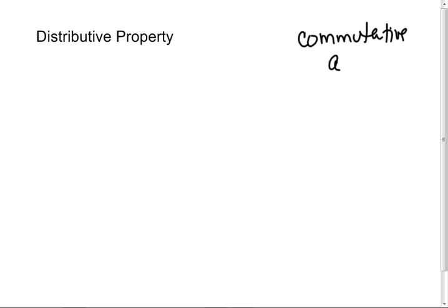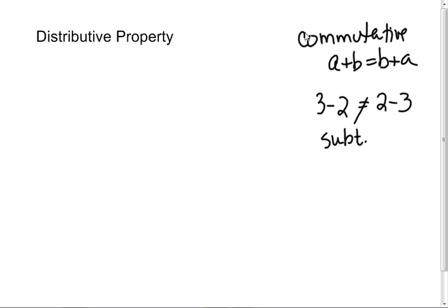Do you remember the commutative property? A plus B equals B plus A. What if I have 3 minus 2 and 2 minus 3? Are those the same things? No, not the same. So subtraction—pay attention, because this is what gets you in trouble—it's not commutative.